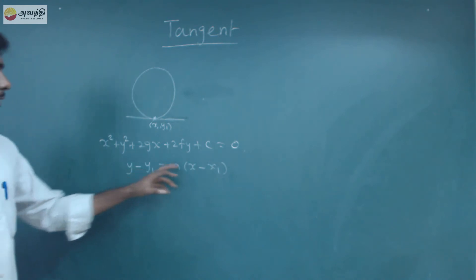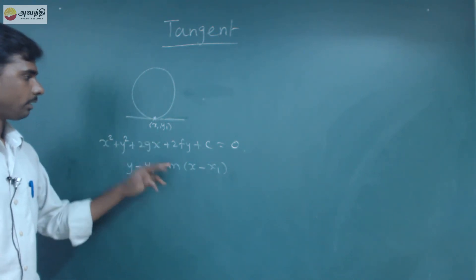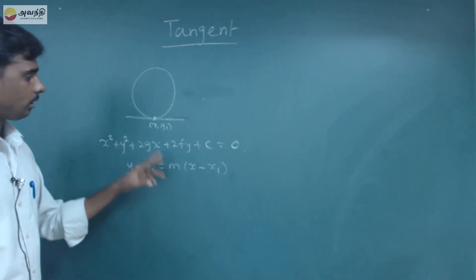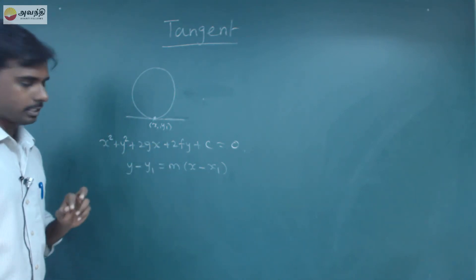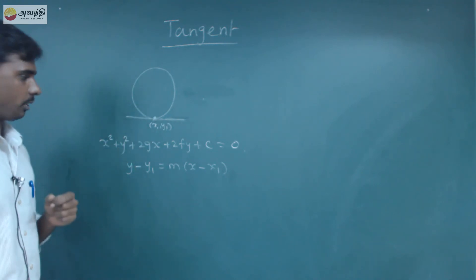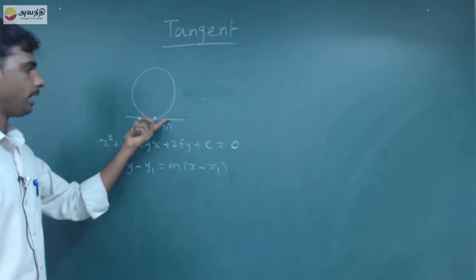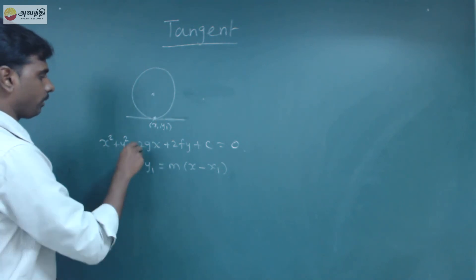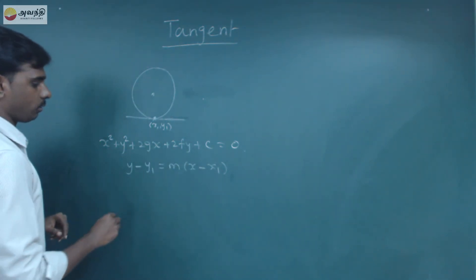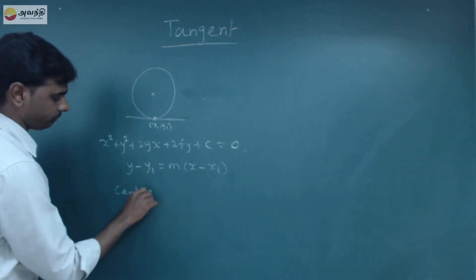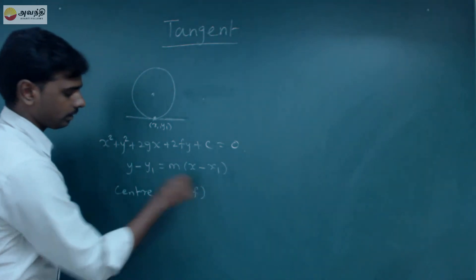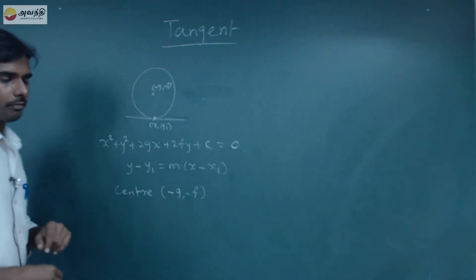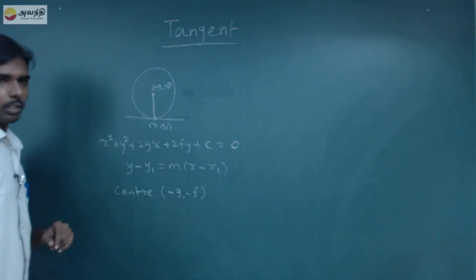This is point (x1, y1). We change the point x1 and y1. If m is the slope, we can take the slope of the line. This circle's center — in the equation, what is the center? The center is (−g, −f). In this point, we are doing perpendicular to this point.